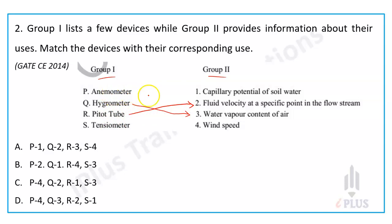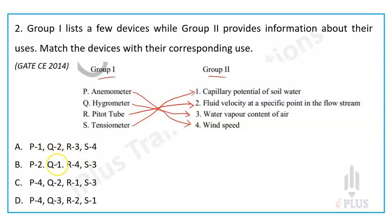Tensiometer and anemometer — anemometer measures wind speed. After matching all devices: option B is P4, Q3, R2, S1. So option D is the right answer.